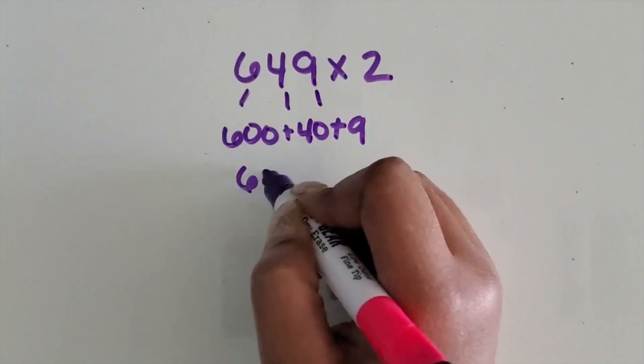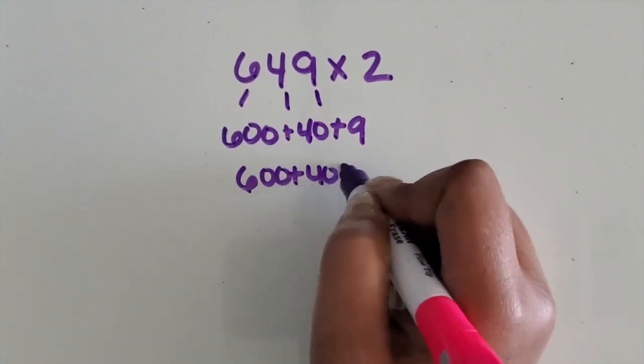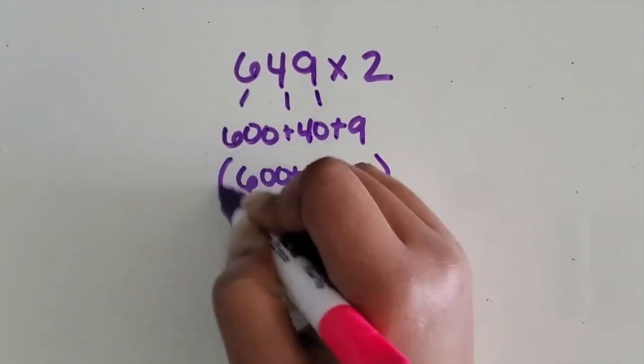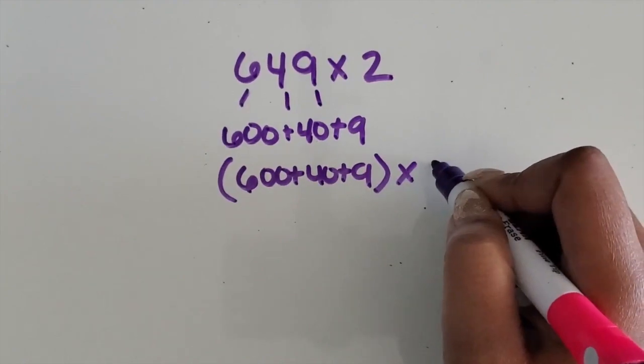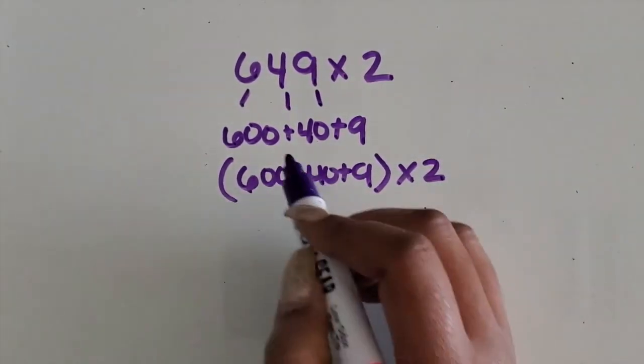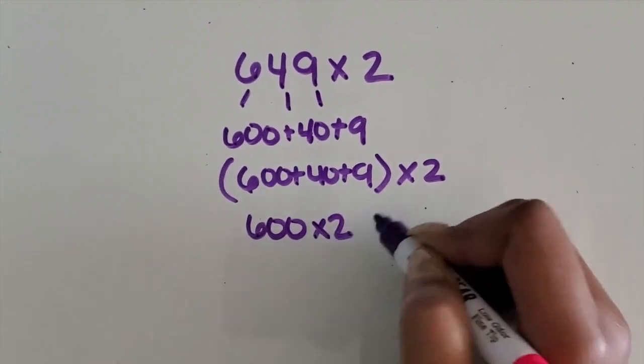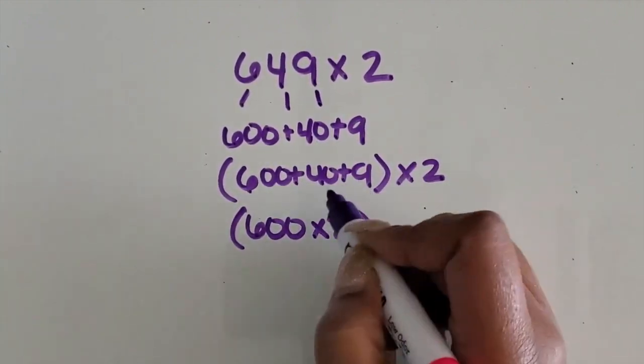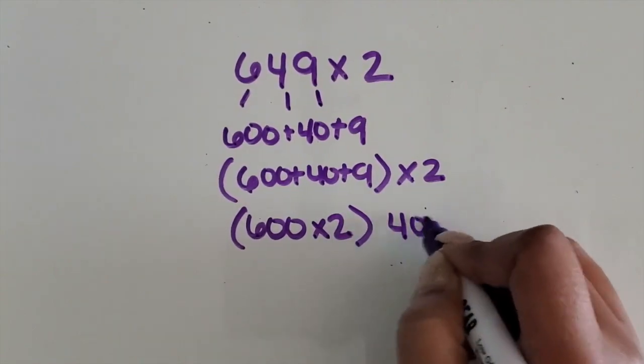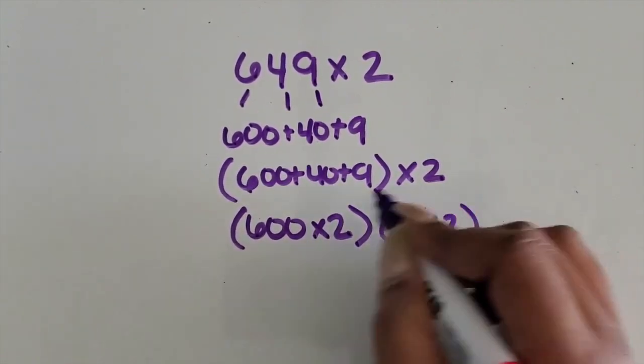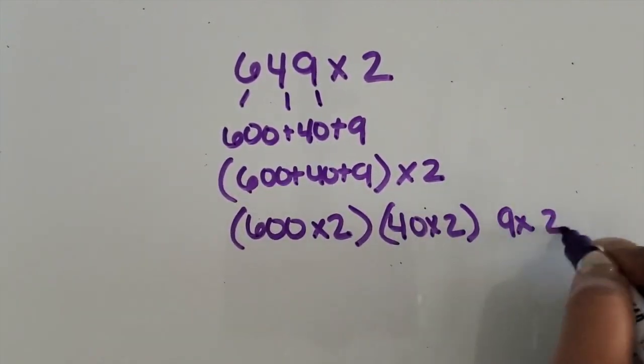I'm going to rewrite it and multiply those values by 2. So we're going to take the hundreds, 600 times 2, close them up in parentheses, the 40 times 2, and the 9 times 2.